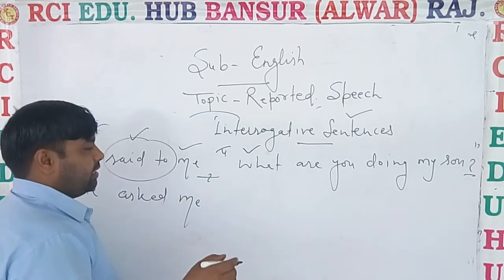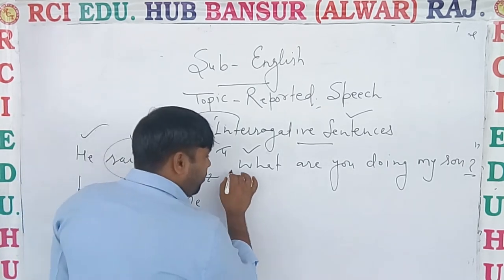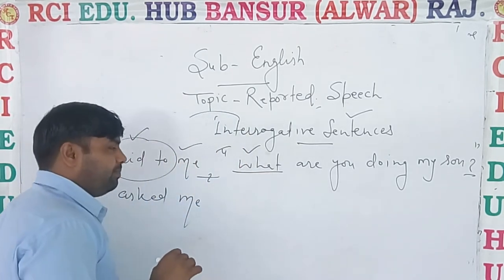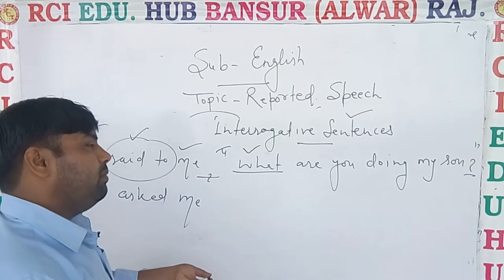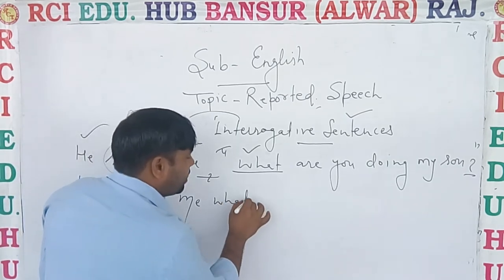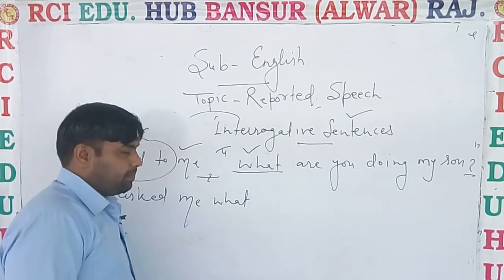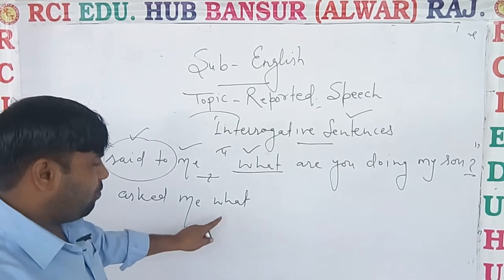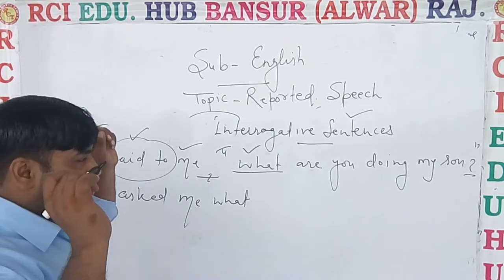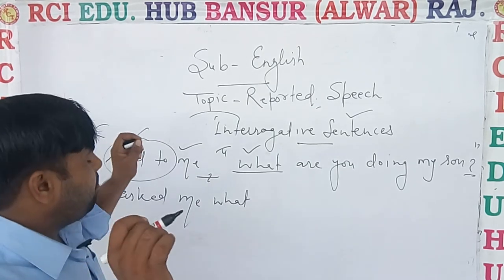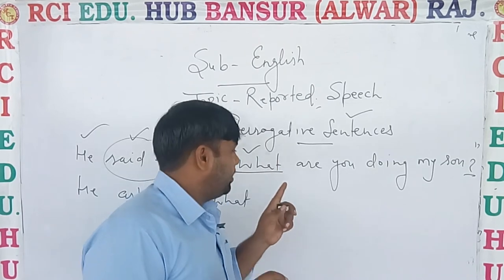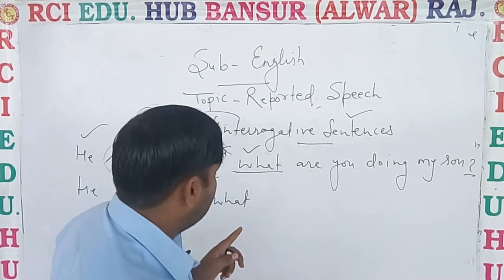Remove commas. Use 'if' or 'that' as connectors. If a WH word is given, then it will remain the same — no need to use connectors. What will be what. Most important thing is that if the sentence is interrogative.